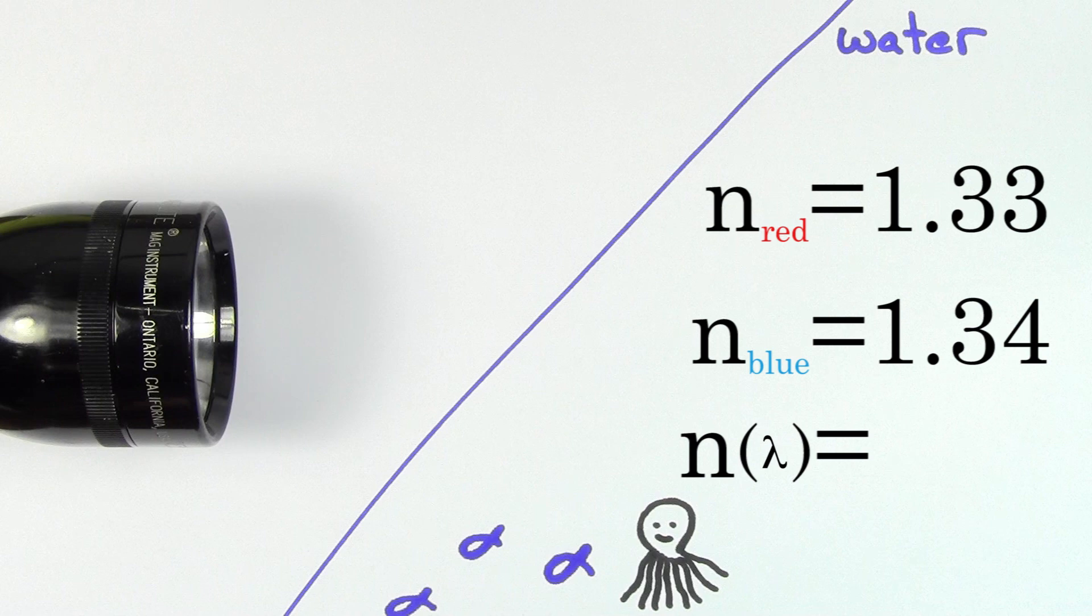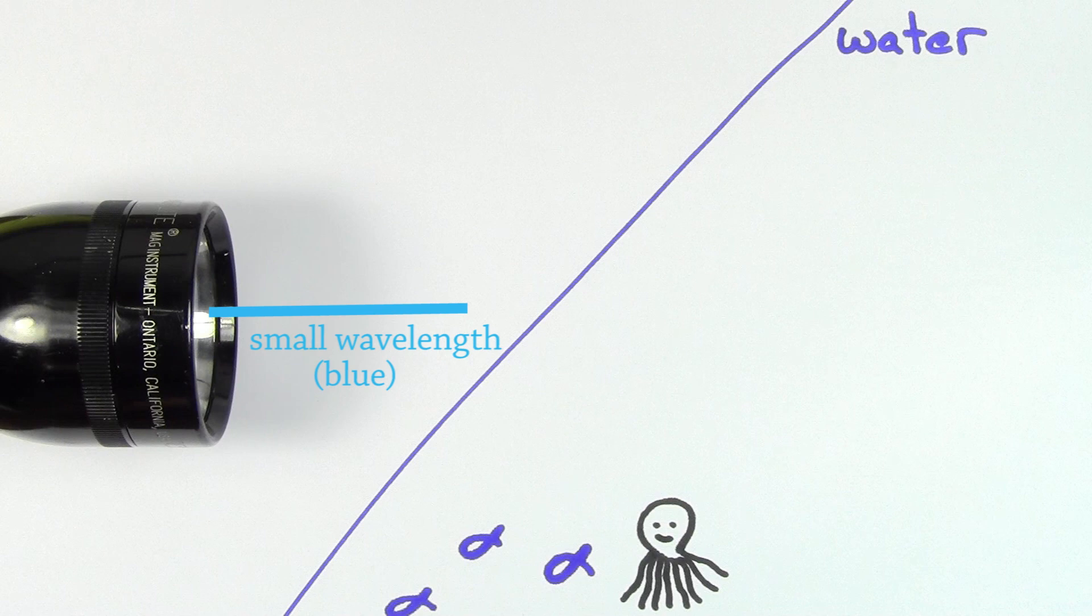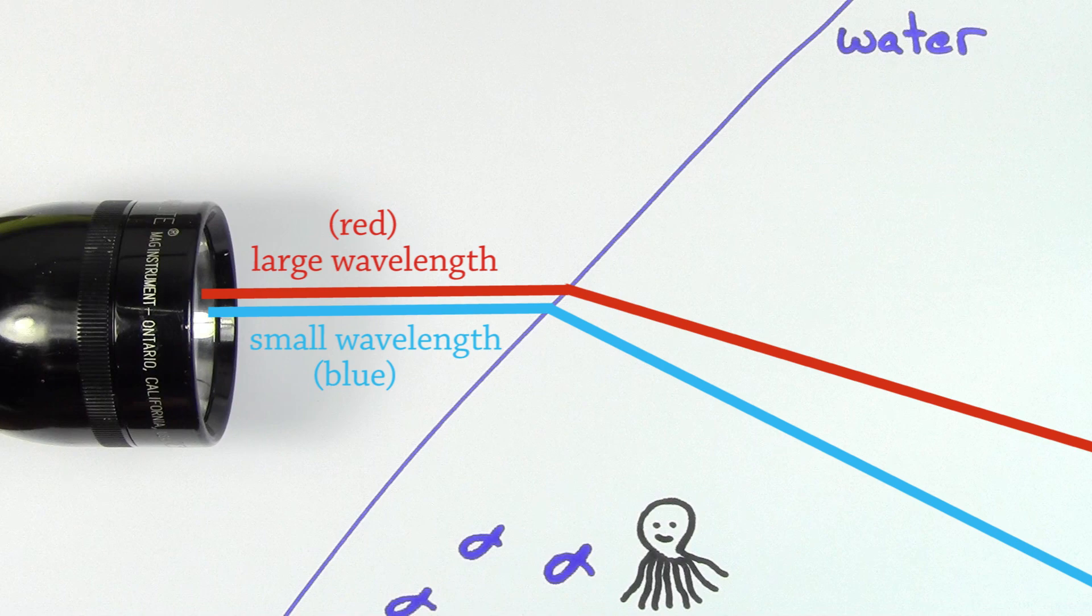In fact, for most materials, the smaller the wavelength of the light, the larger the index of refraction, which means smaller wavelength light will bend more than larger wavelength light in most materials.